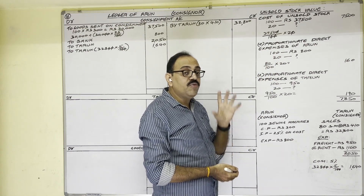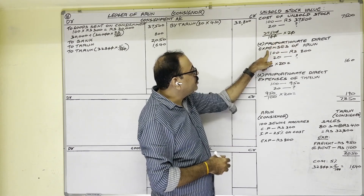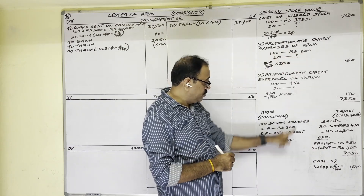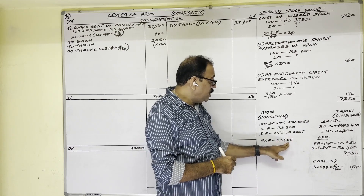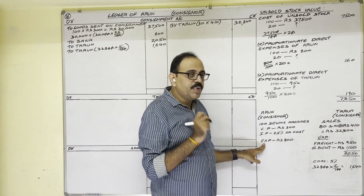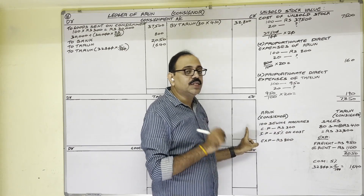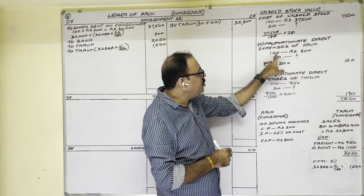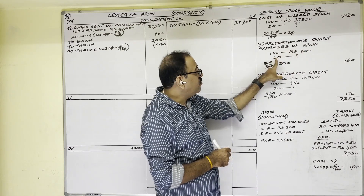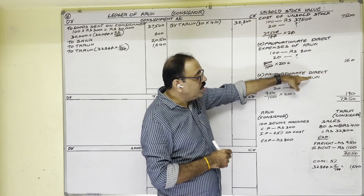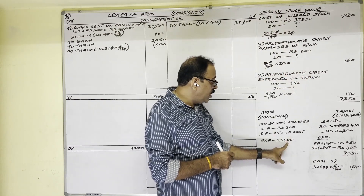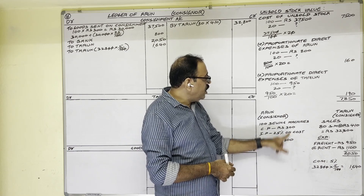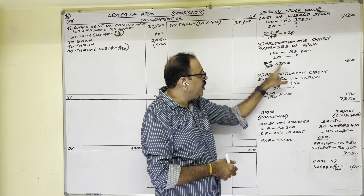Proportionate direct expenses of Arun the consignor: on 100 machines, Arun's expenditure is 800 rupees. In the absence of proper information, consignor expenditure is treated as direct expenditure, so we consider it while calculating unsold stock value. On 100 machines expenditure is 800, so on 20 machines: 800 ÷ 100 × 20 = 160 rupees.